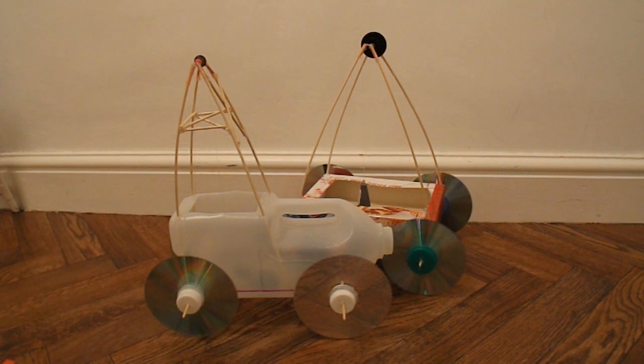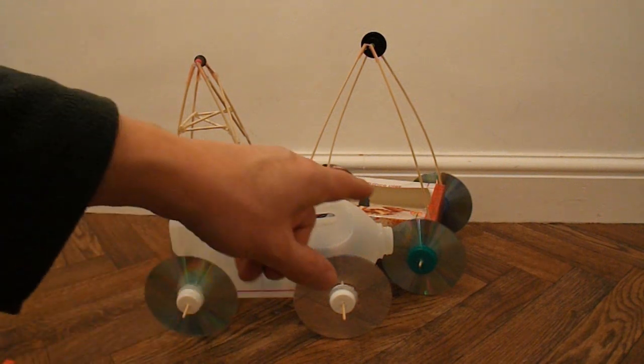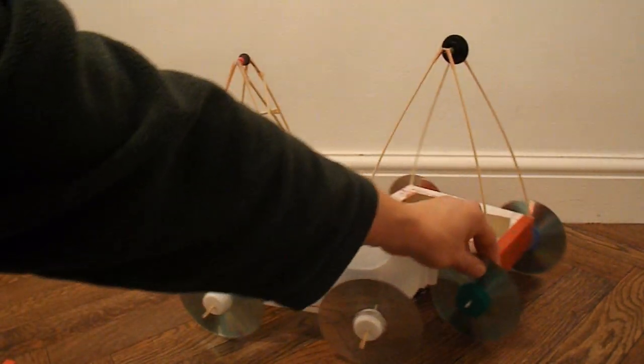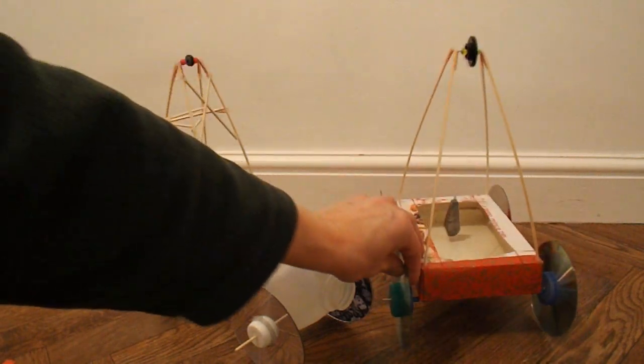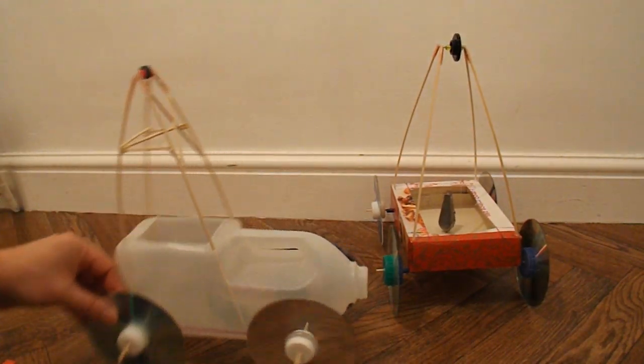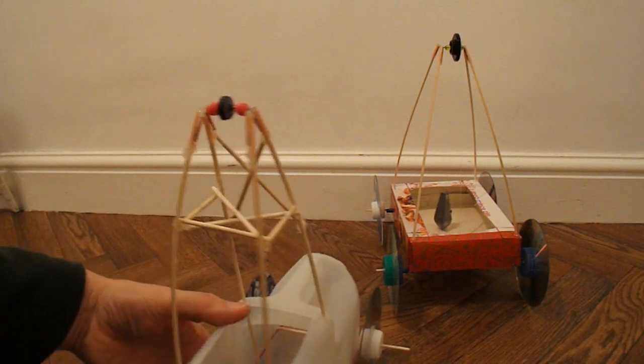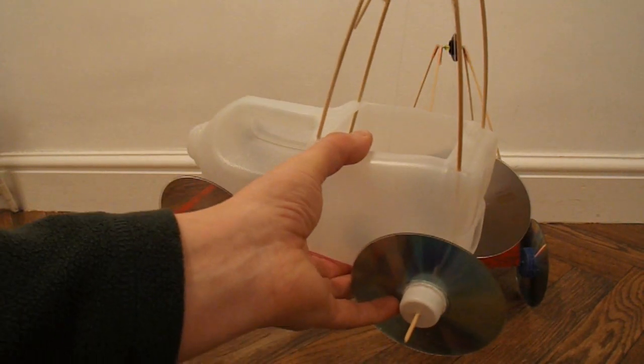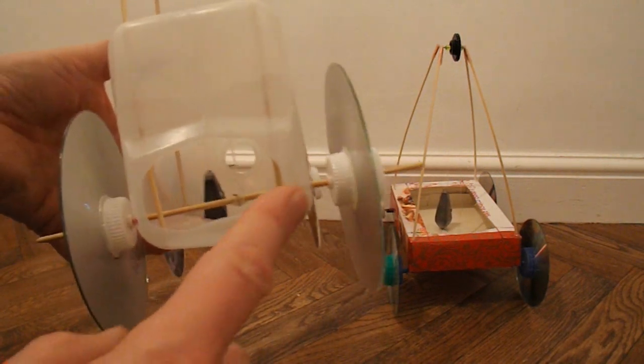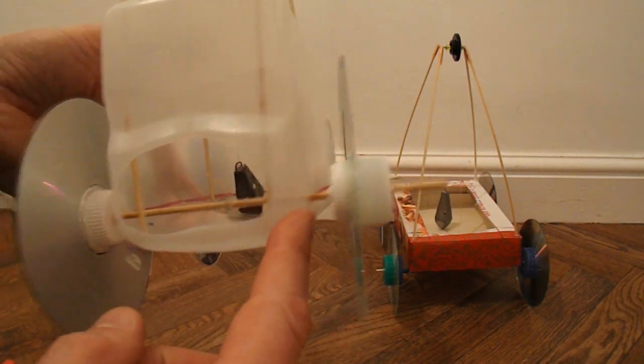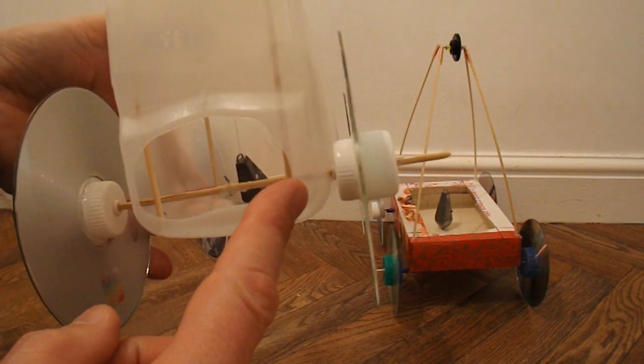What I've tried to do this time is reduce the friction on the axles, on the bearings. And to do that, I've got rid of the drinking straws that are on the bottom of this one. And now I'm just using a plastic milk carton. And the idea being that the bearing surfaces are just the thickness of the plastic carton.